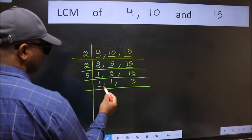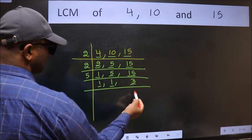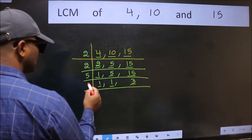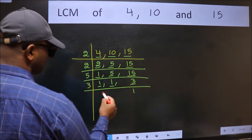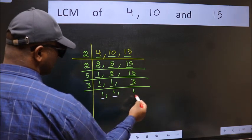Now we got 1 here and here, so focus on the next number 3. 3 is a prime number, so 3 into 3. So we got 1 in all 3 places.